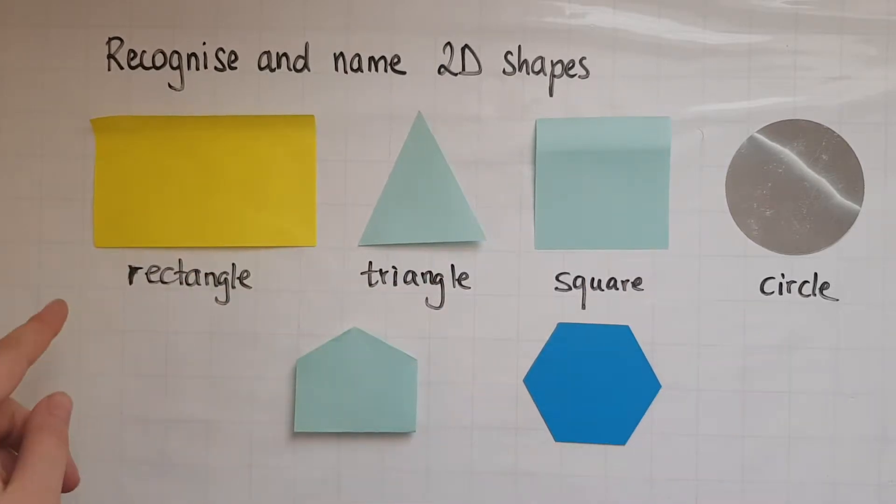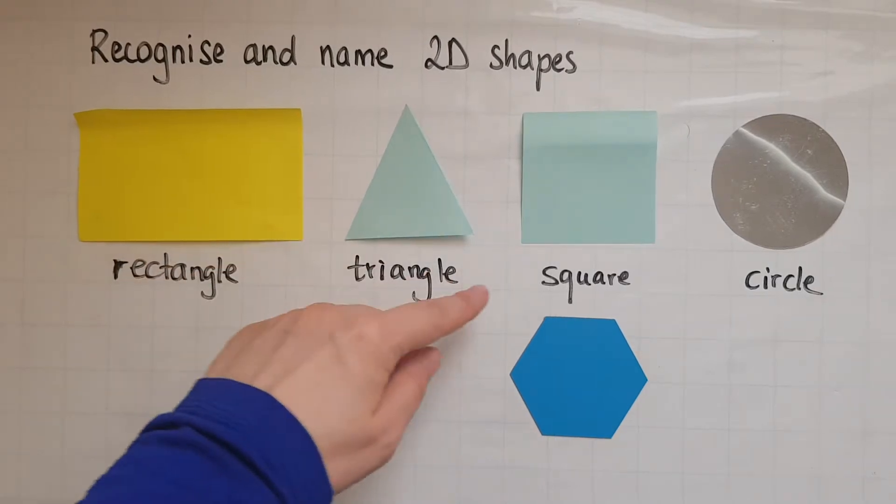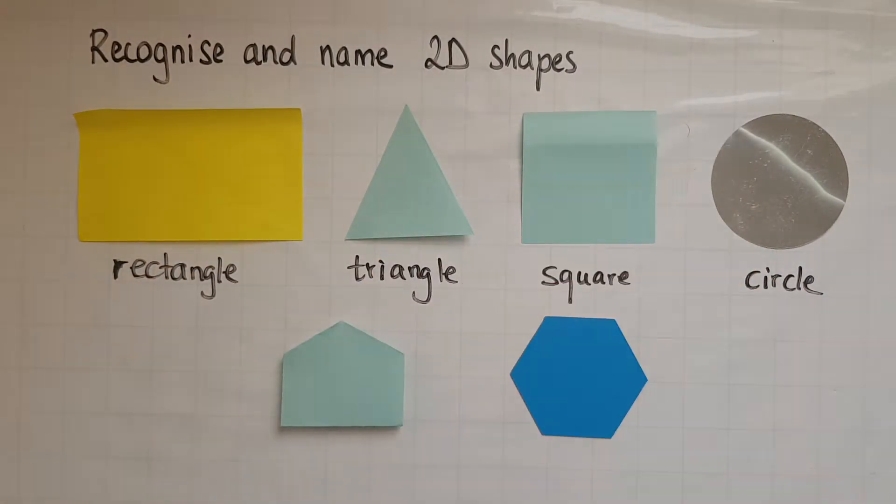At entry 1, we looked at these four shapes at the top: rectangle, triangle, square, and circle. If you need to revisit these or you can't remember or recognise these shapes, then revisit the entry 1 video on 2D shapes.